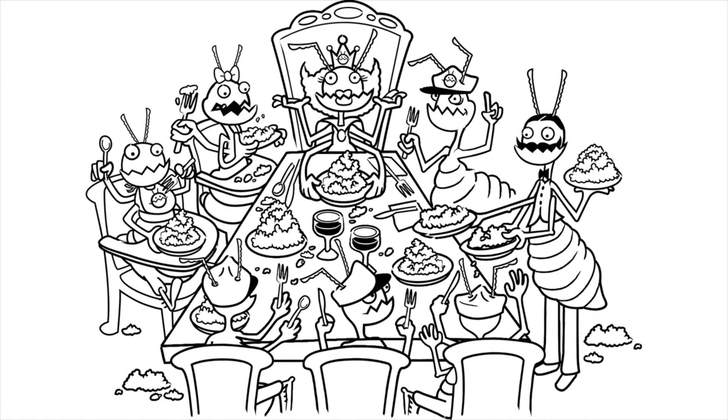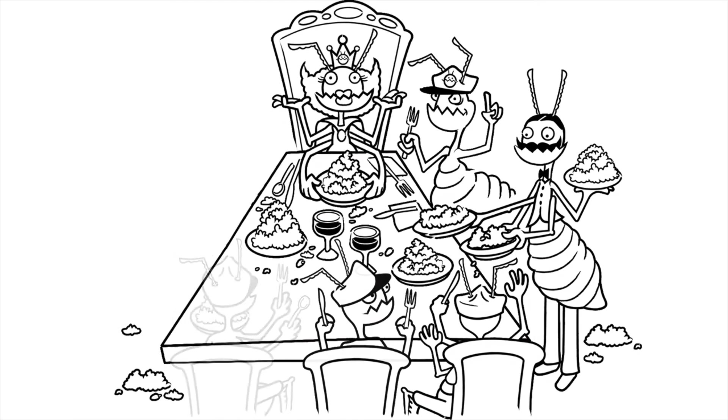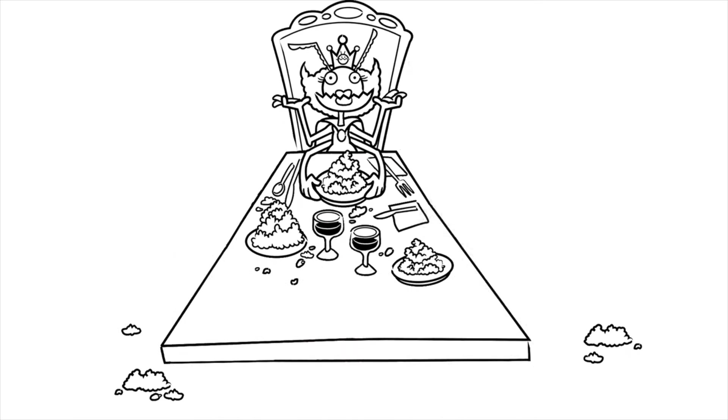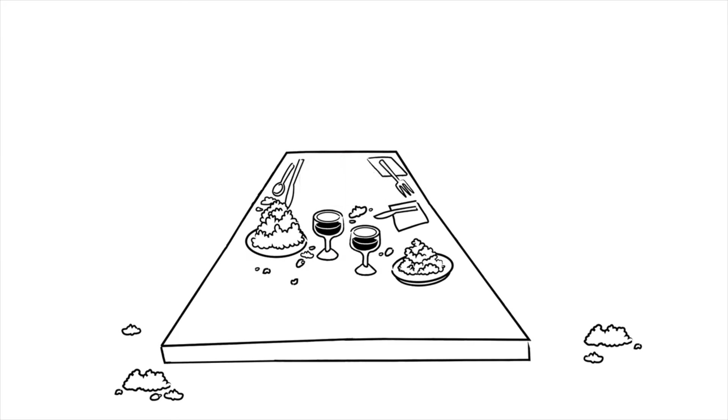The younger termites vanish first, followed by sequential generations, until the colony is completely gone. Basically, from the inside out.